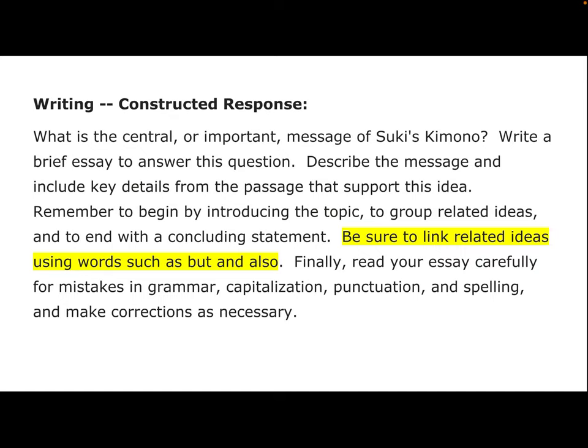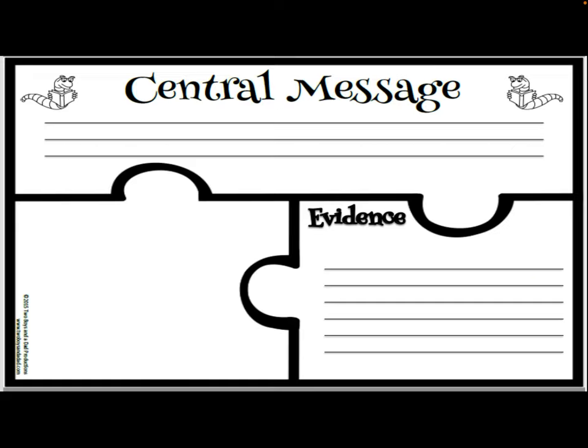And then it says be sure to link related ideas using words such as but and also — those are transition words. They just want me to use transition words, that's not too hard. And then finally, read your essay carefully for mistakes in grammar, capitalization, punctuation, and spelling, and make corrections as necessary. That just means proofread. So basically this is: what's the central message of Suki's Kimono? Write a paragraph with an introduction, supporting details, and a conclusion, and make sure you proofread it before you turn it in. Well, why didn't they just say that?